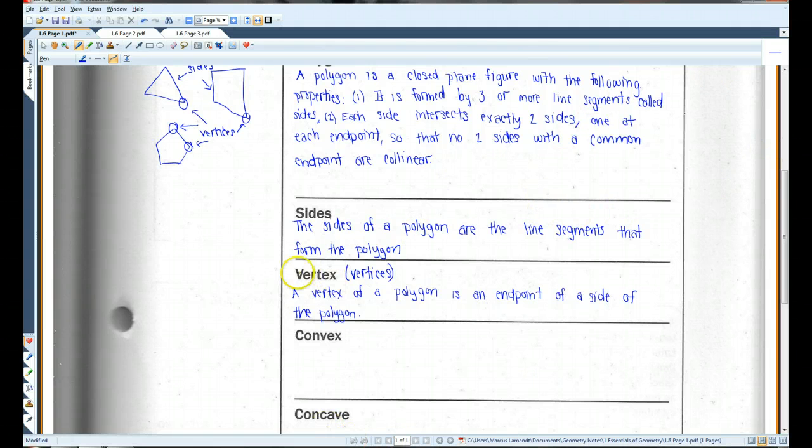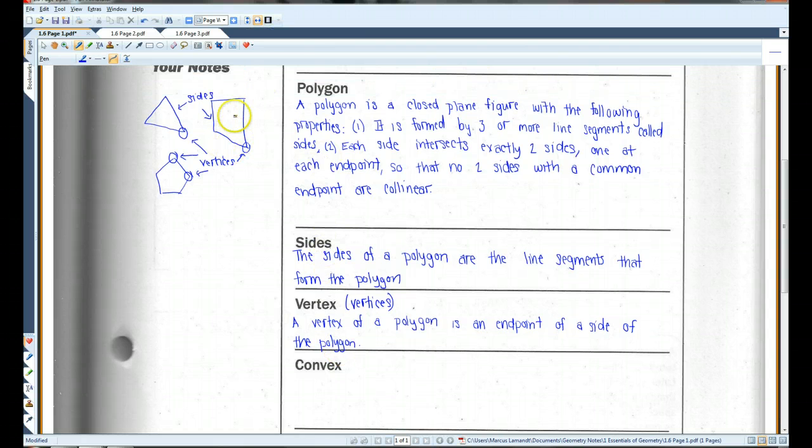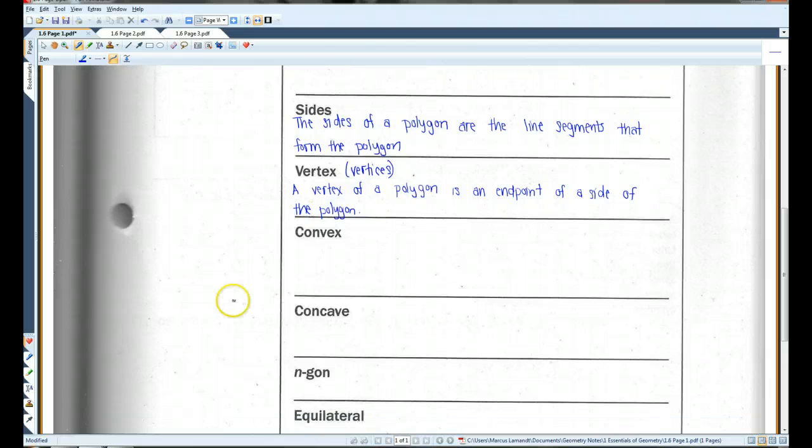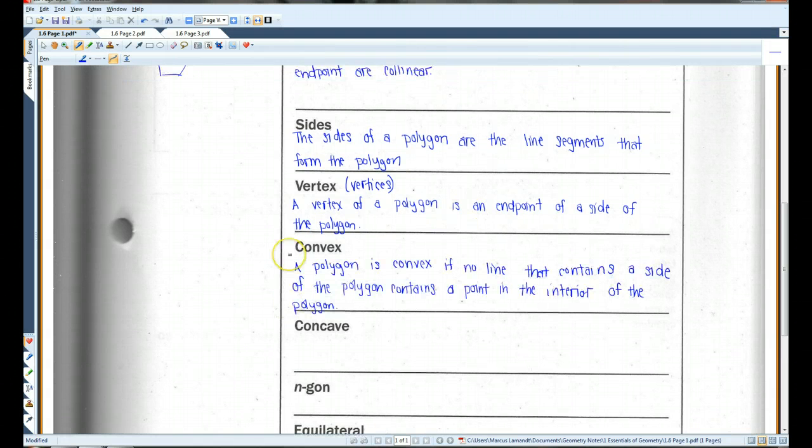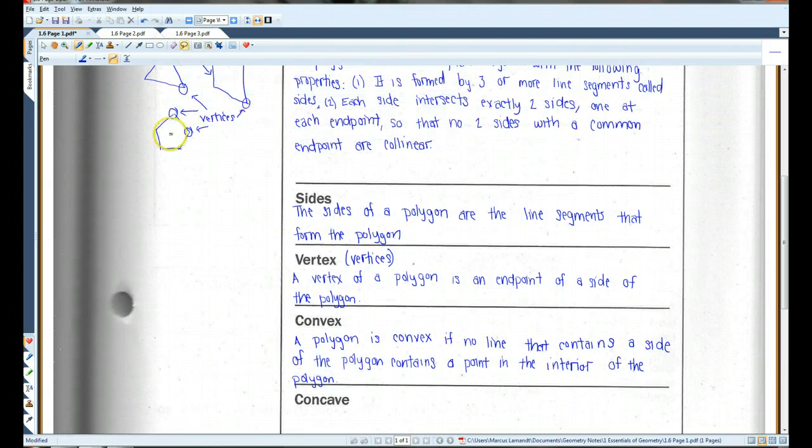Convex. If you have a convex polygon, that means none of the vertices are inside the polygon. So, these would all be convex polygons. So basically, if all the vertices are facing out, it's convex.